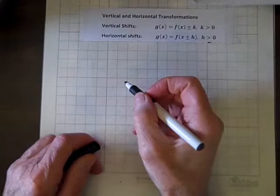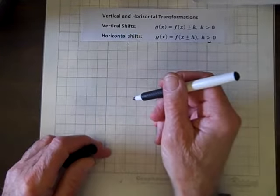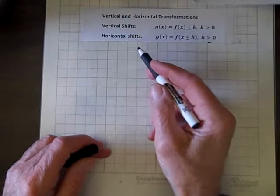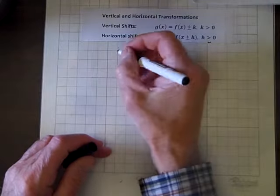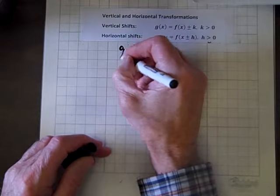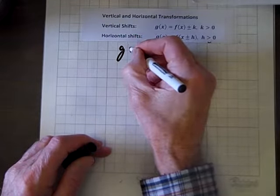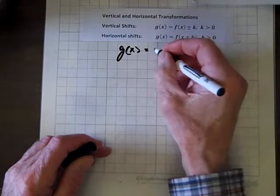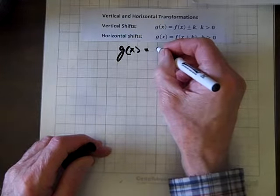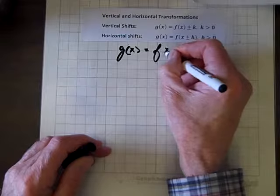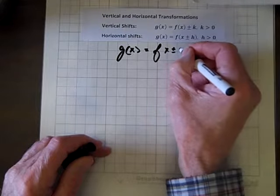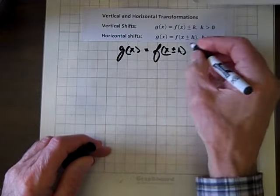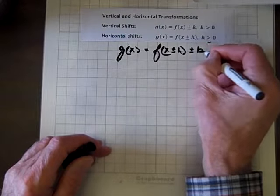This time we'll deal with a function that has both a horizontal shift and a vertical shift. So we'll deal with something like this, g of x equals f of x plus or minus h plus or minus k.